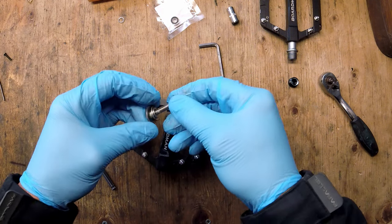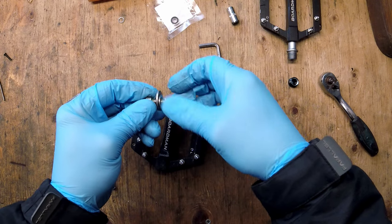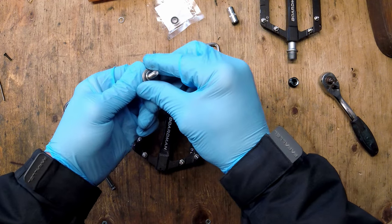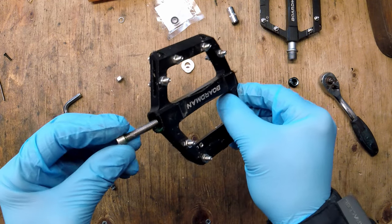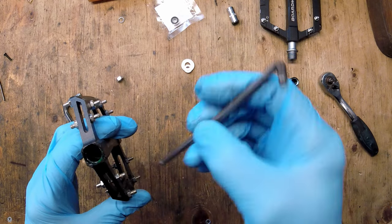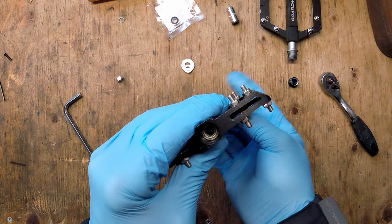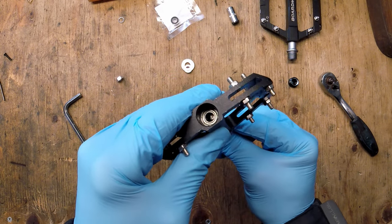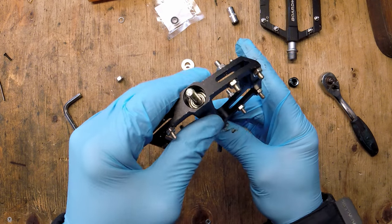Now I've found a little way of getting these bearings out without causing too much stress. It's just a series of washers. Just drop an allen bolt in there and you want that allen bolt to come through the bearing like so.